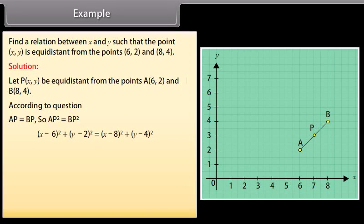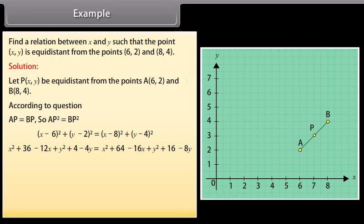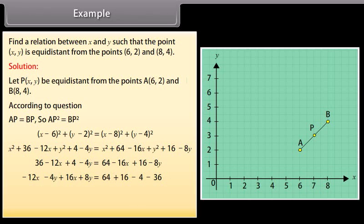x minus 6 whole square plus y minus 2 whole square equals x minus 8 whole square plus y minus 4 whole square. By calculating, we get x squared plus 36 minus 12x plus y squared plus 4 minus 4y equals x squared plus 64 minus 16x plus y squared plus 16 minus 8y. Simplifying: 4x plus 4y equals 40, which gives x plus y equals 10.